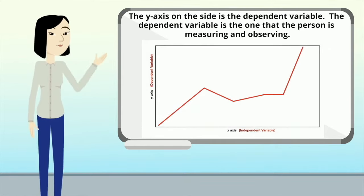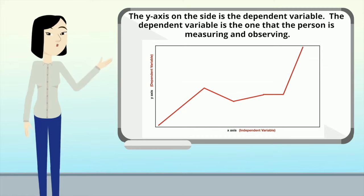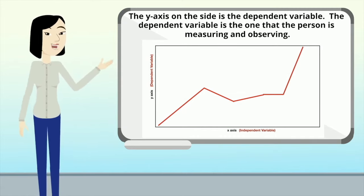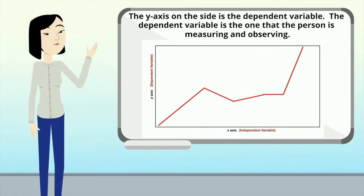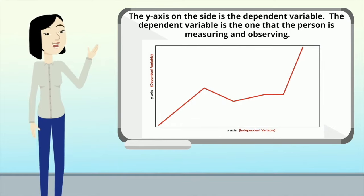The y-axis on the side is the dependent variable. The dependent variable is the one the person is measuring and observing.